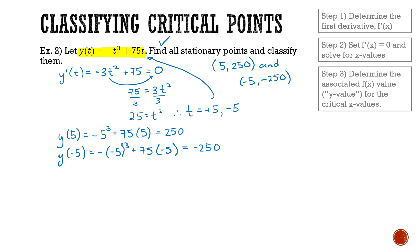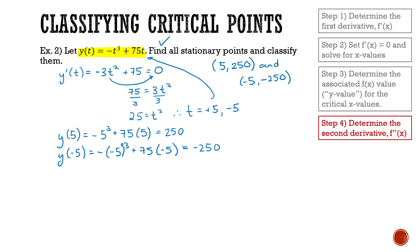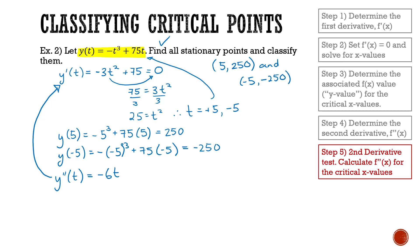Now we're going to classify them — determining whether they're a minimum, maximum, or saddle point. To do that, I'll first determine the second derivative. y double prime of t equals the derivative of negative 3t squared, which is negative 6t, and the derivative of 75 is zero. So the second derivative is negative 6t.